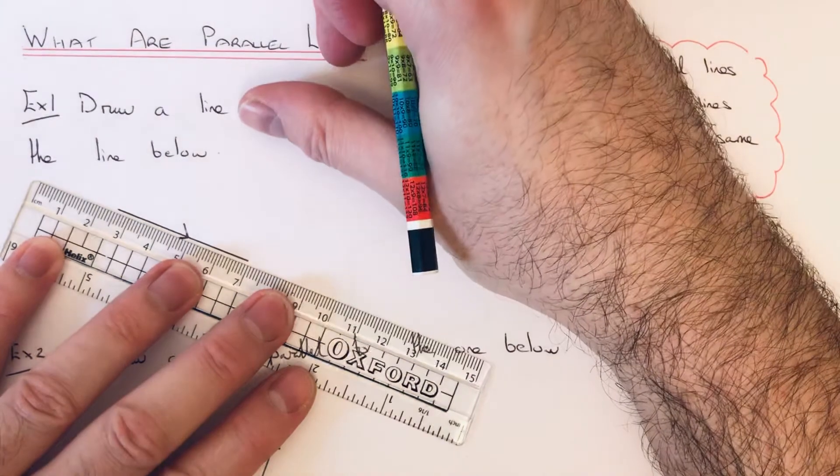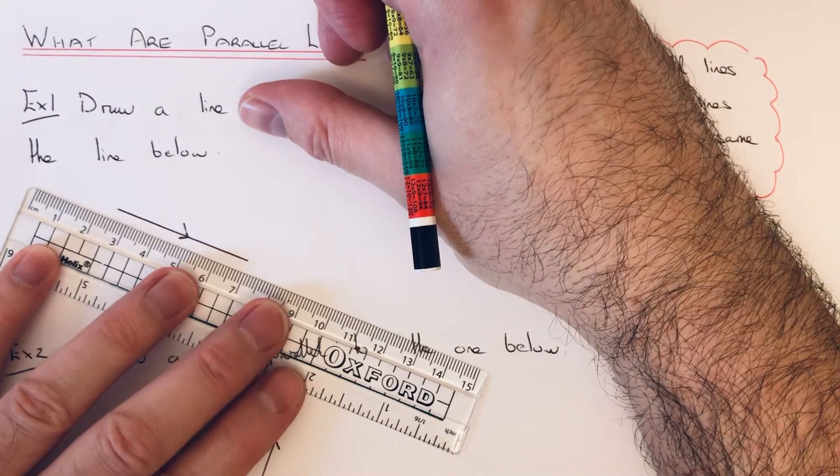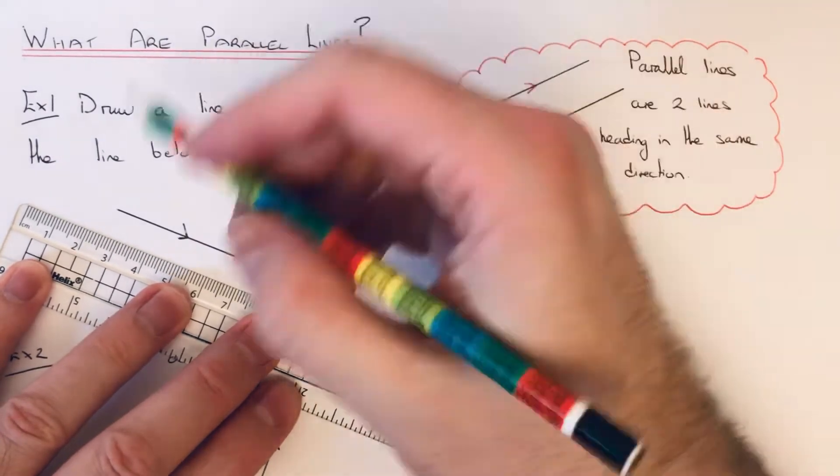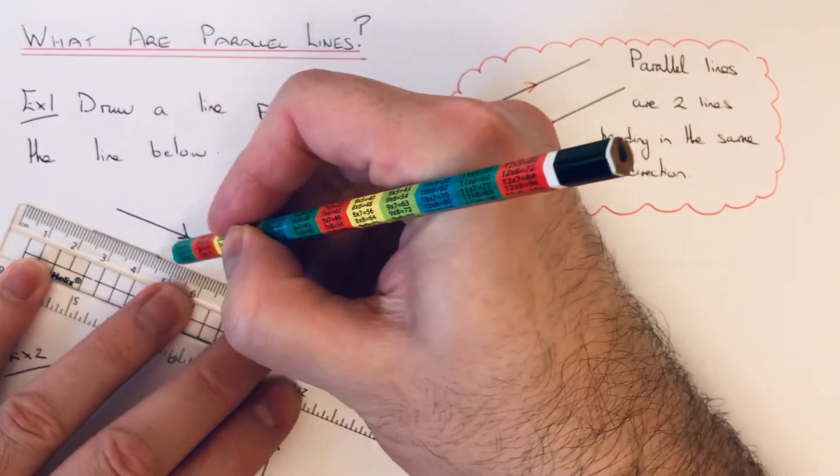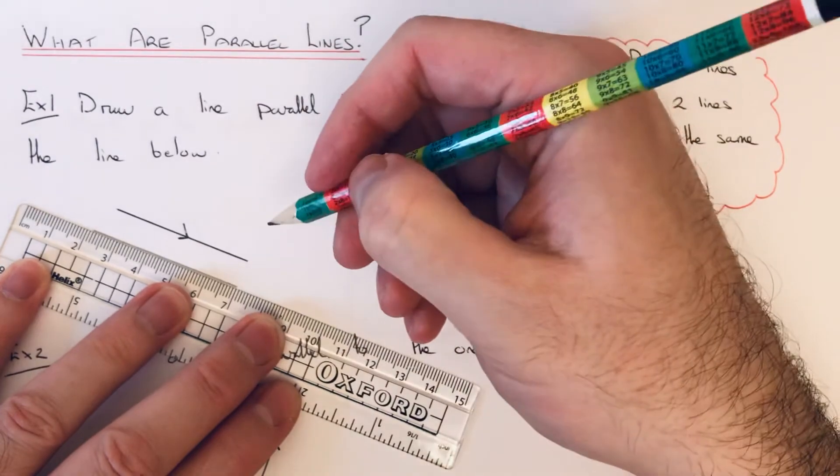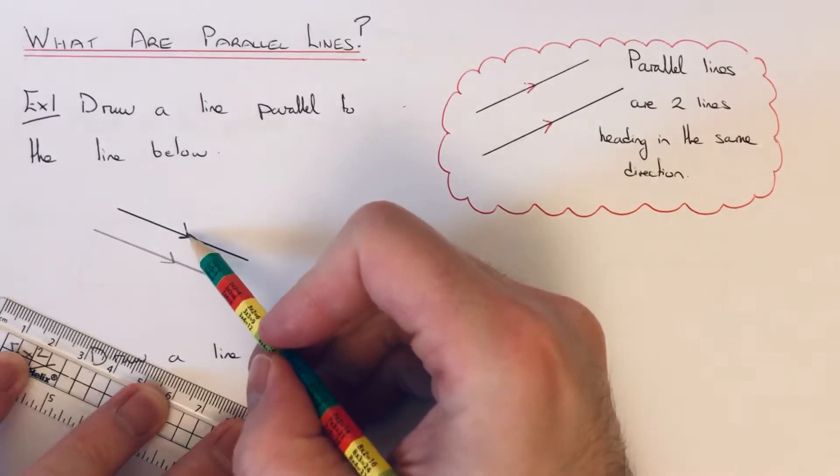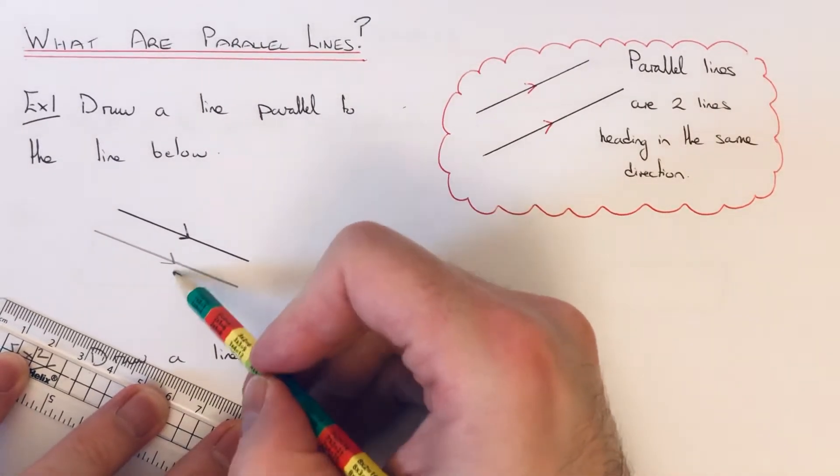So I'm just going to move it slightly away, keep it at the same angle. I'm just going to draw a parallel line here. So there we go, and I'm just going to mark the arrow on there, so a pair of arrows means the lines are parallel.